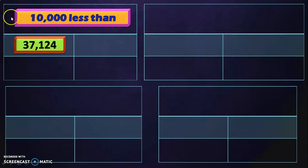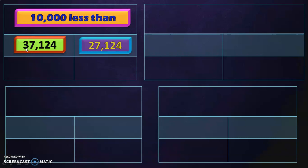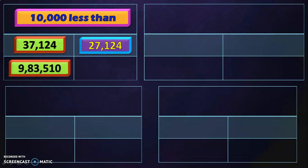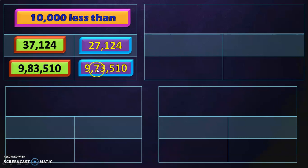Let's move on to the next topic: 10,000 less than a given number. The same way, we reach the 10,000's place and subtract 1. So 10,000 less than 37,124 is 27,124 (3 minus 1 is 2). The next number is 9,08,3510 — 10,000 less than this is 9,07,3510.